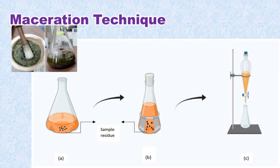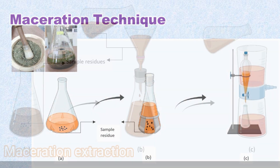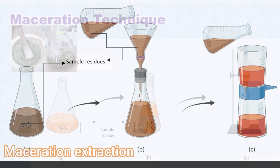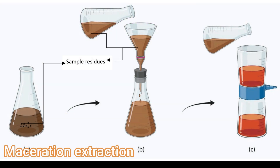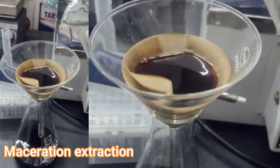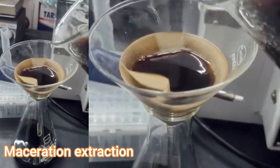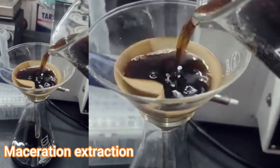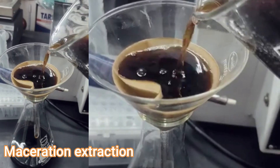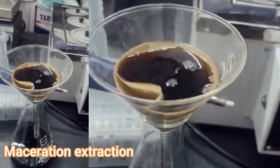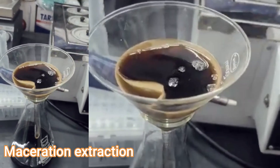Take the plant material, soak it in the solvent overnight, or for two to three days, then simply filter it. Maceration is a very commonly used extraction technique and it is used for plant materials that are slightly sensitive to high temperature.